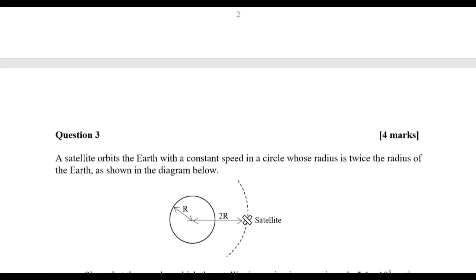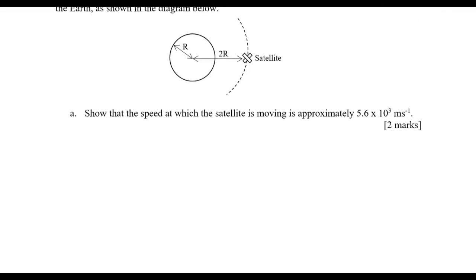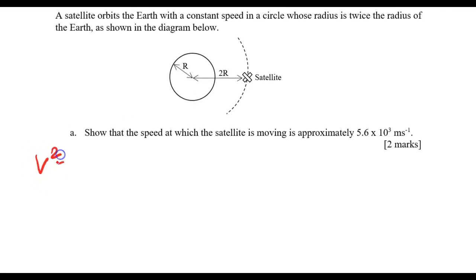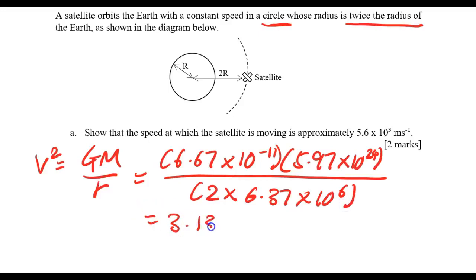Question number three: a satellite orbits the Earth at constant speed in a circle with radius twice that of the Earth, as shown in the diagram above. Show that the speed of the satellite is approximately 5.6 × 10³ meters per second. We have to show this equation, so I'll make things fast. I know the formula: v² = GM/r. Let's substitute the value: G times mass of the Earth 5.97 × 10²⁴ divided by r, and r here is twice the radius of Earth, so twice of 6.37 × 10⁶. For this value itself, it's 3.13 × 10⁷ meters squared.